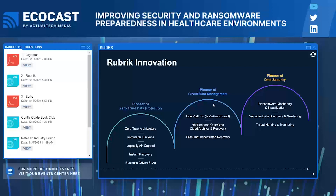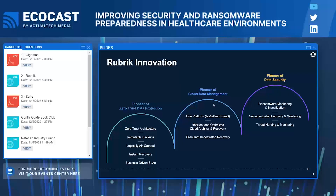Around 2019 we came across our first ransomware scenario where one of our customers called and said their production systems were impacted and encrypted. We realized that Rubrik was safe because we had immutable backups, so they were able to recover. But what we also started building solutions around was quick recovery and ransomware monitoring so that we could monitor your backups for any ransomware situations. We would provide tools to discover any sensitive data, monitor your systems, NAS, file systems, and unstructured data for sensitive information. We also provide a way to hunt for threats within backup platforms so we can get a clean recovery point.